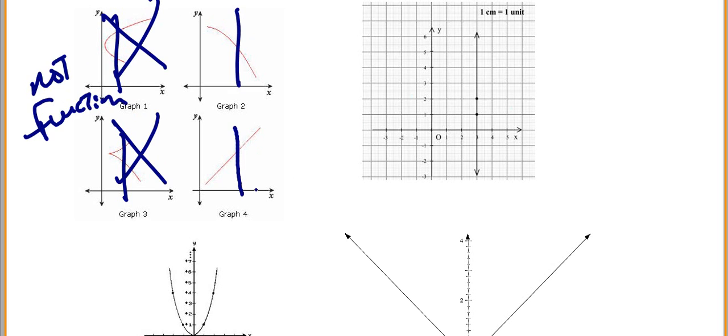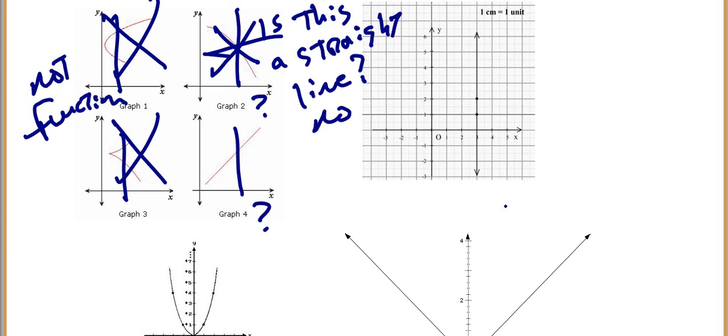Now, that passes and that passes, but only one of these is a linear function. Is it graph two or is it graph four? Well, as two, is this, just to ask you this question, is this a straight line? No. So therefore, it is not a linear function. That is, a function is not linear. So this is a linear function.